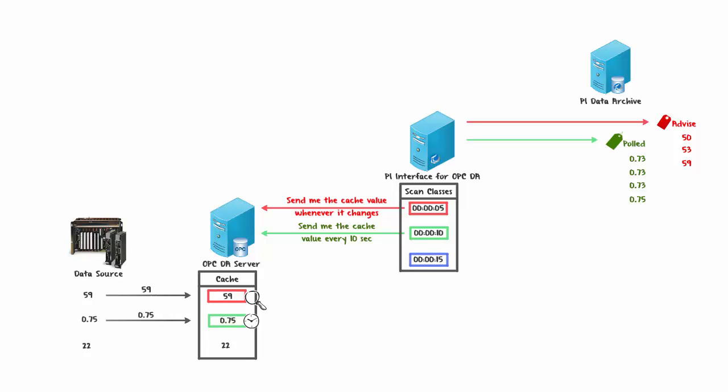For the last Scan Class, if the PI Interface for OPC DA finds an Event Point, it won't do anything immediately, because for every Event Point there's a trigger point defined. It's only when this trigger point gets a new value that the PI Interface makes a request to the OPC Server — asking it to scan the device directly for a new value, bypassing the cache. This value is then sent to the Event Point, making it ideal for cases where a PI Point should only receive values when another PI Point on the PI Data Archive gets a new value.